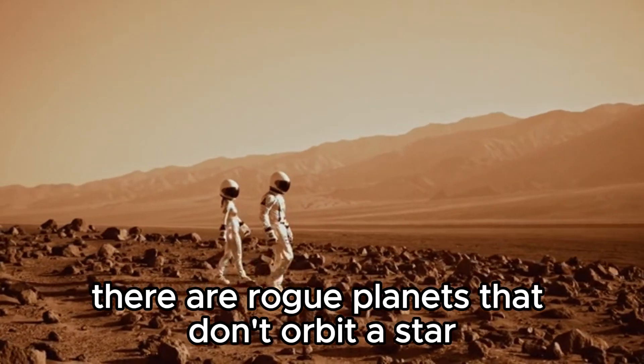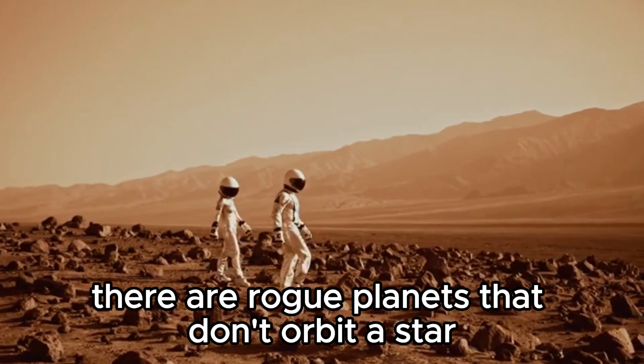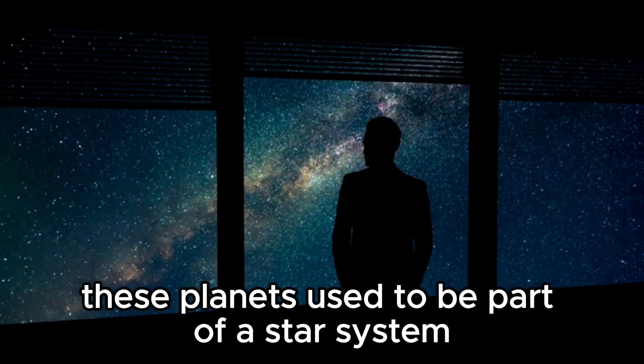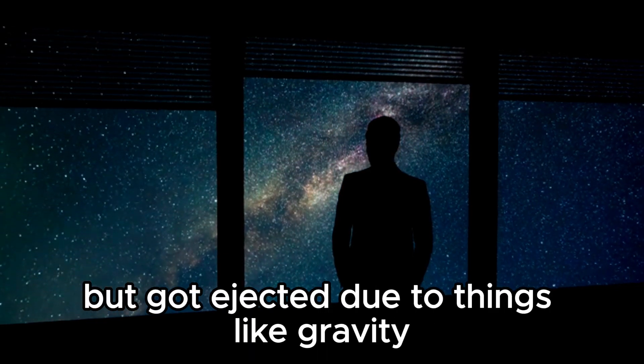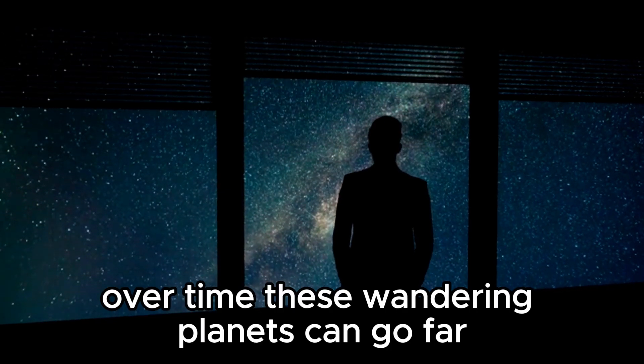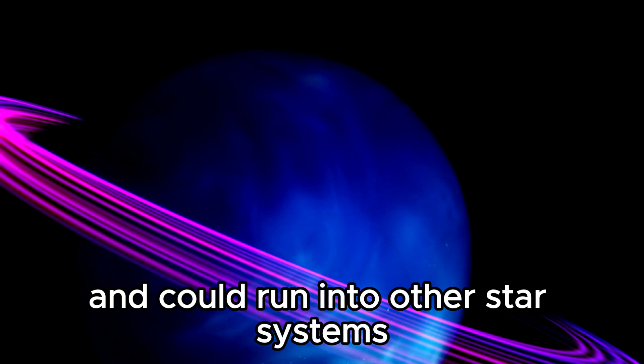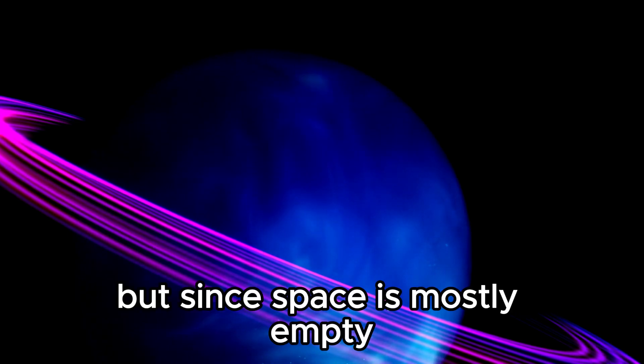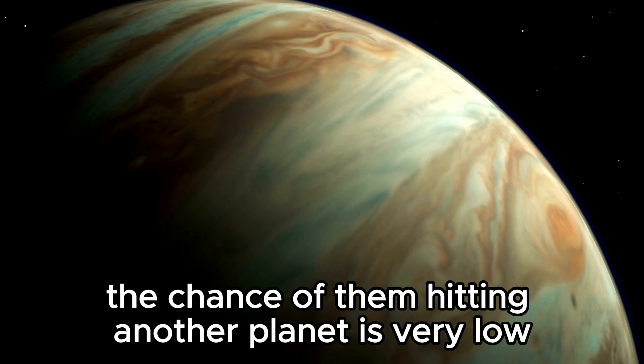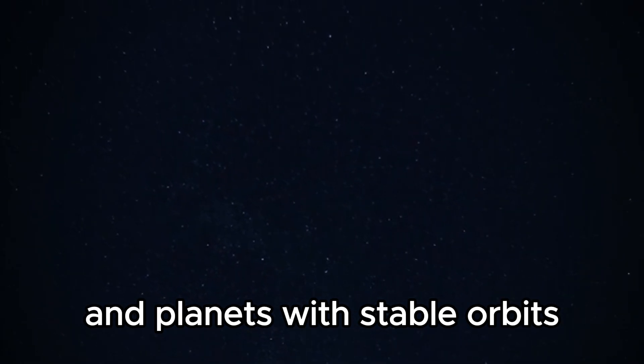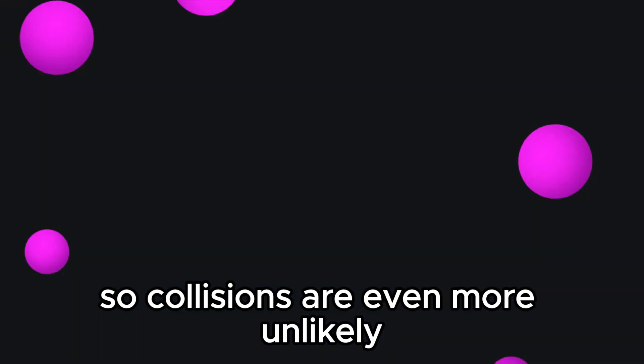Sometimes, there are rogue planets that don't orbit a star and float around erratically. These planets used to be part of a star system but got ejected due to things like gravity or when another star came too close. Over time, these wandering planets can go far and could run into other star systems. But since space is mostly empty, the chance of them hitting another planet is very low. Rogue planets are interesting compared to the number of stars and planets with stable orbits, so collisions are even more unlikely.